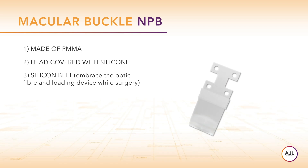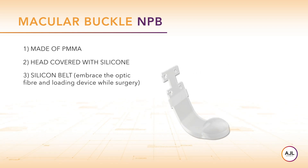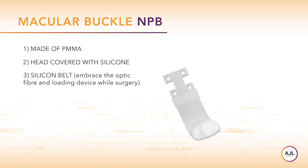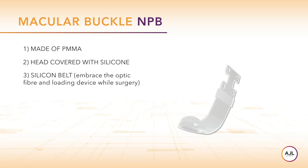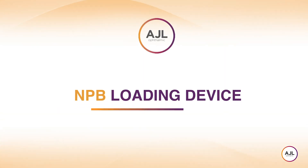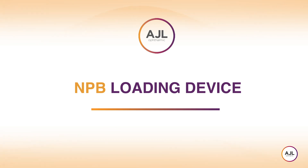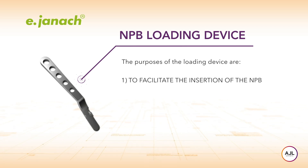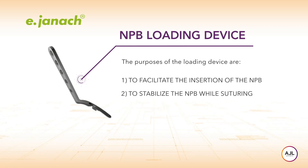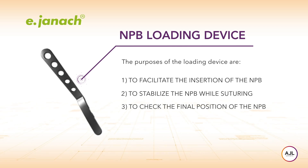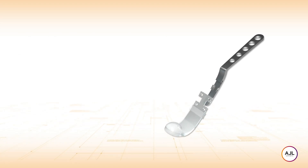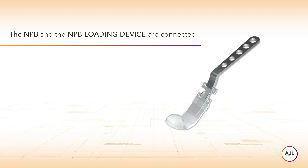This is how the inner side of the NPB appears. The NPB is made of two parts: the arm and the head. The arm serves to suture the NPB to the eyeball, while the head serves to buckle the sclera. The NPB and the NPB loading device are aligned and connected to prepare the insertion.